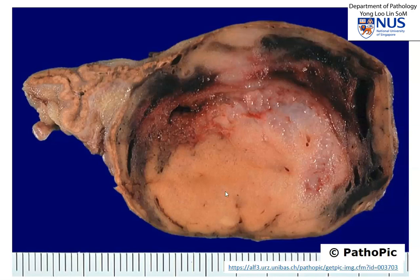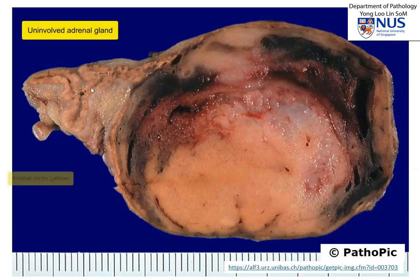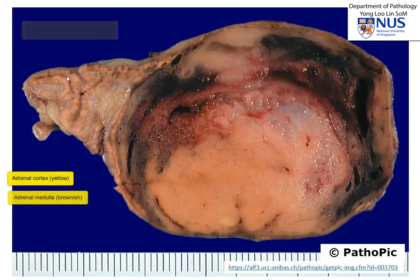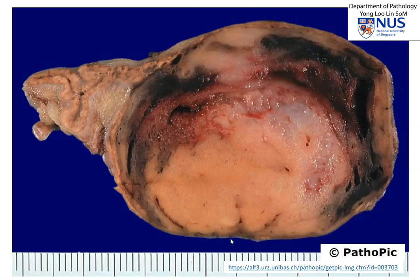Here is a fresher example. In this picture, we can actually see the residual adrenal gland. I'm outlining the brighter yellow adrenal cortex. The medulla is actually browner, and it is in the center. So this is an example of an adrenal pheochromocytoma.